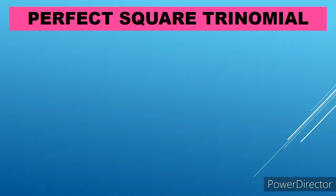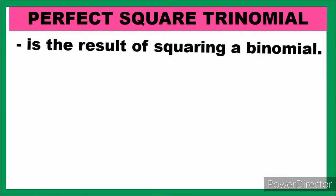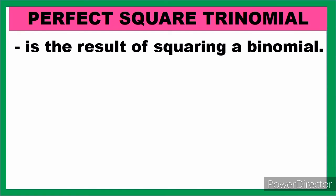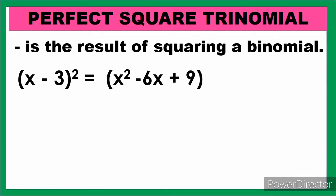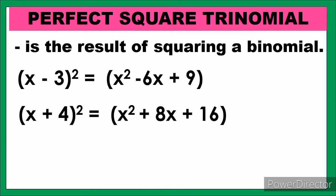Let us first define what is a perfect square trinomial. A perfect square trinomial is the result of squaring a binomial. For example, the square of x minus 3. Here, x minus 3 is a binomial — x is the first term and negative 3 is the second term. The product is x² minus 6x plus 9, which is a trinomial. This trinomial is what we call a perfect square trinomial.